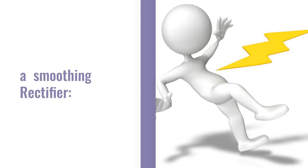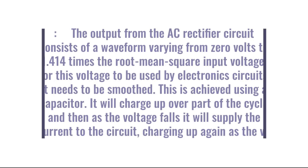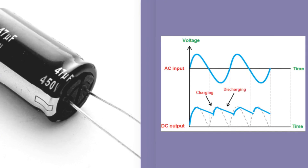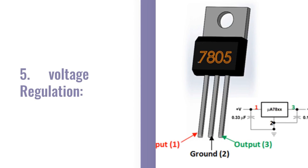4. A smoothing capacitor. The output from the AC rectifier circuit consists of a waveform varying from 0 volts to 1.414 times the root mean square input voltage. For this voltage to be used by electronic circuits, it needs to be smooth. This is achieved using a capacitor. It will charge up over part of the cycle and then as the voltage falls it will supply current to the circuit, charging up again as the voltage rises.